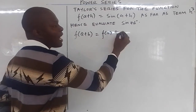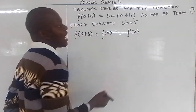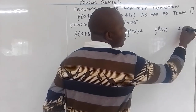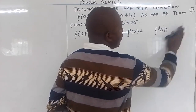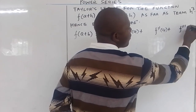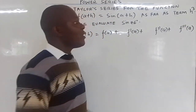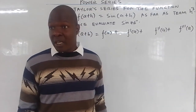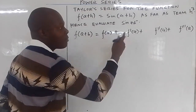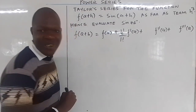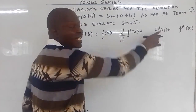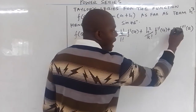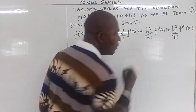f(a+h) equals f(a), then plus — you differentiate it for the first time, giving h to the power 1 over 1 factorial; differentiate for the second time, giving h squared over 2 factorial; differentiate for the third time, giving h cubed over 3 factorial. That is where h cubed appears.